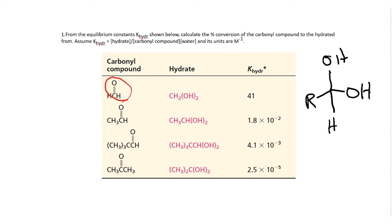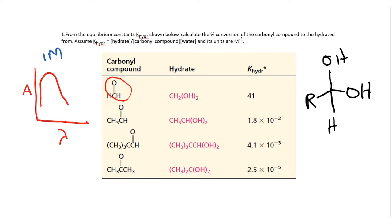The way the experiment is done is that you would take the aldehyde and measure the absorption — this is the absorption axis and this is lambda — so you would measure the absorption of the aldehyde in an organic solvent, maybe acetonitrile or THF or something. Then let us say we start with one molar of the aldehyde and measure the absorption; you will get some value.